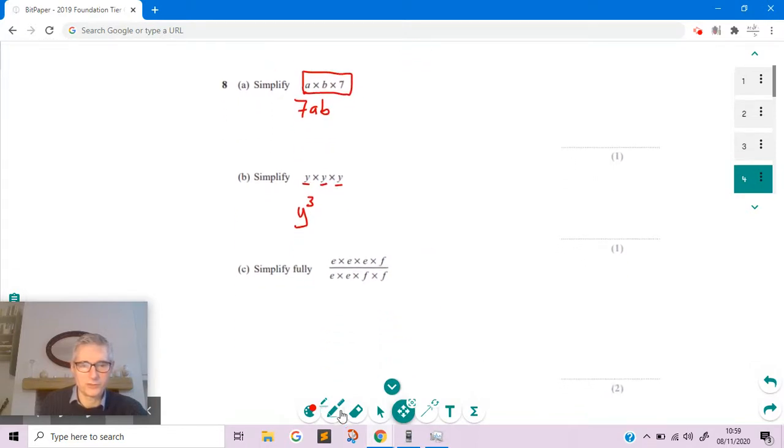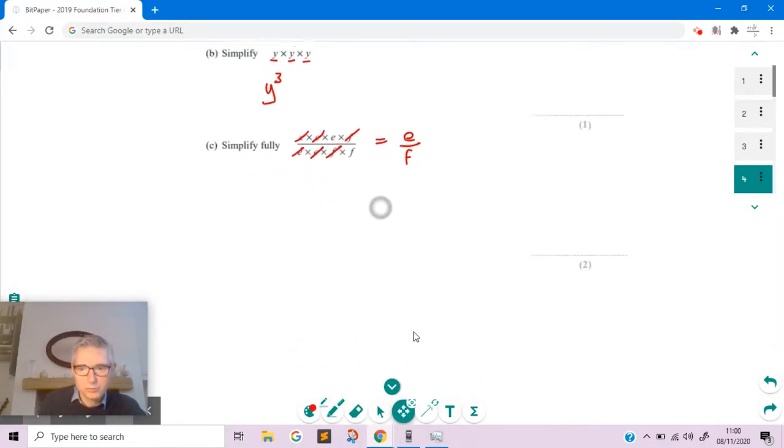Moving on to this one, which is C. When we've got letters which are separated by multiplication on the top and bottom of the fraction, we can actually cancel them. We've got an E on the top there, and that cancels with an E on the bottom. As long as we pair them off, we're all right. We can cancel that E with that E. That E on the top is going to stay there. We've got an F there, and I can cancel it with that F. So what we're left with is just E over F.